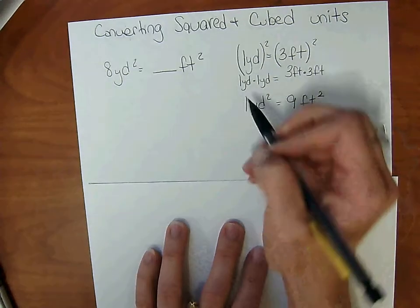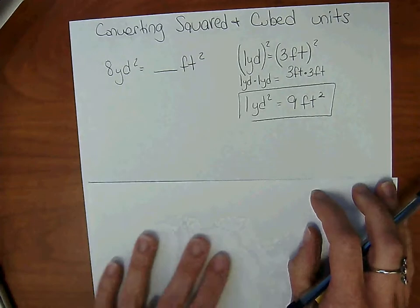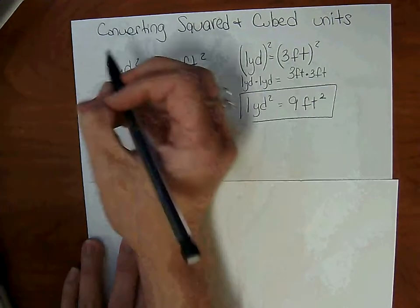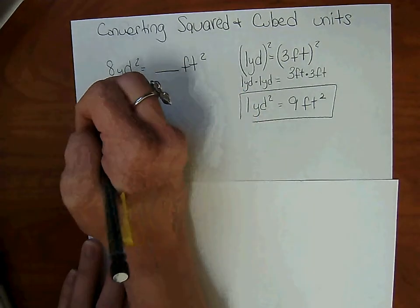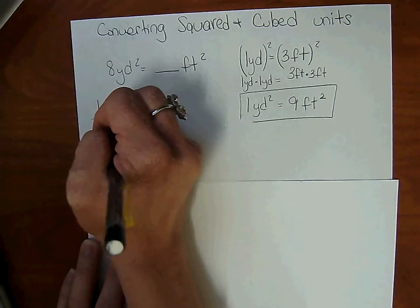Now we have a fact that we can use to convert. So take your fact and we're going to use proportions to solve. So 1 square yard equals 9 square feet. Set it equal.